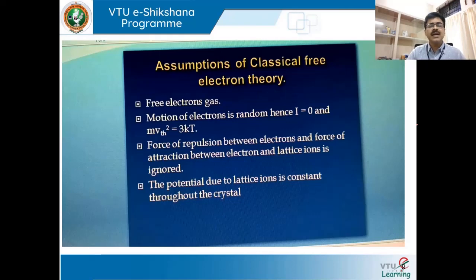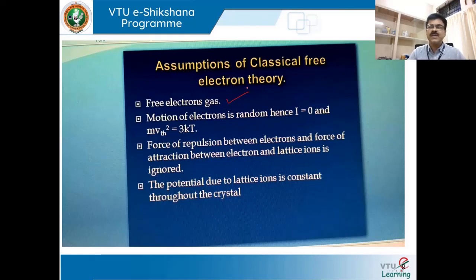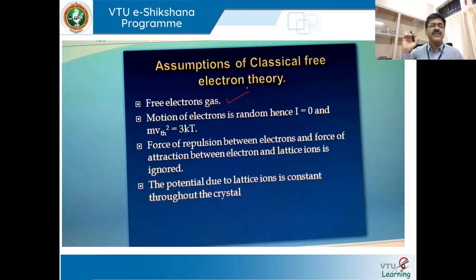To understand conductivity based on the classical approach, let us look at the assumptions of the classical free electron theory. Drude and Lorentz together developed this theory with certain assumptions. The first assumption is that every electron within a metal is considered similar to a gas molecule — freely able to travel from one corner to the other within the surface of the material, where the surface is the boundary of the material.